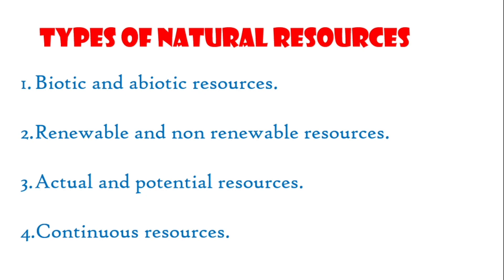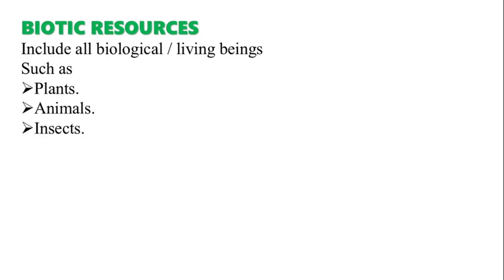Moving to the first type — biotic and abiotic resources. Biotic means it includes all biological or living beings such as plants, animals, and insects. These are considered to be biotic resources.